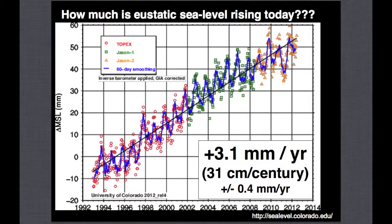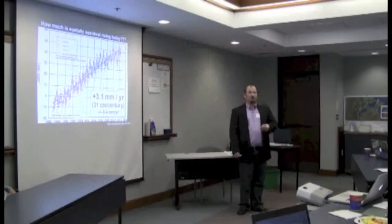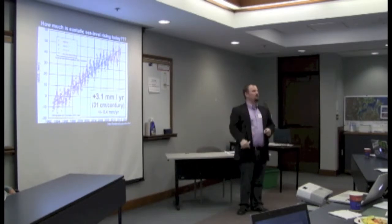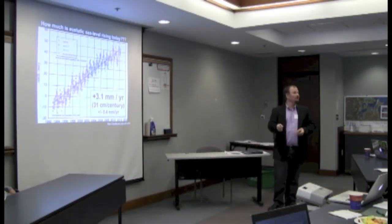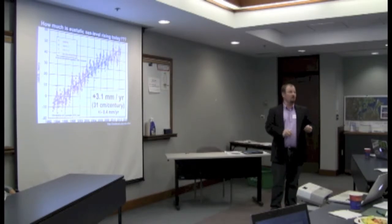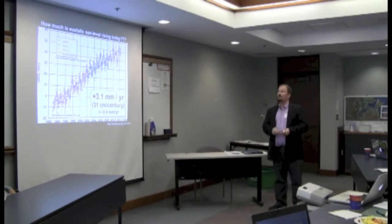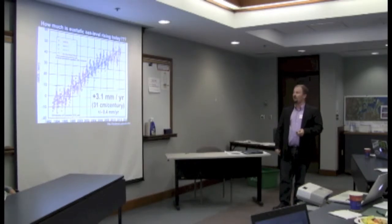So what does this all lead to? Eustatic sea level rise today, taken by satellites Jason-1 and Jason-2, shows a pretty clear increase of 3.1 millimeters per year—that's a third of a centimeter per year. If you're not comfortable thinking about something that small, think about a foot per 100 years, or 31 centimeters per century. If you follow this trend, that's a foot over a lifetime, but the big question is whether it stays linear—and the answer is probably not. Even that one foot of sea level rise would have an impact, but when we think about storm surge, exponential changes become very important.